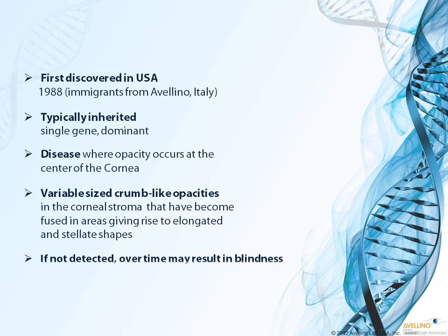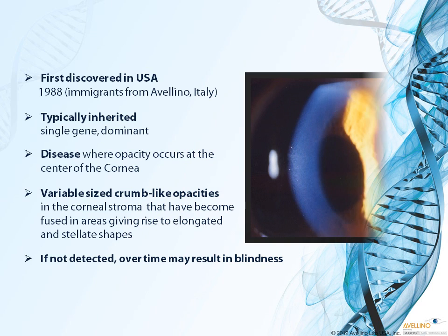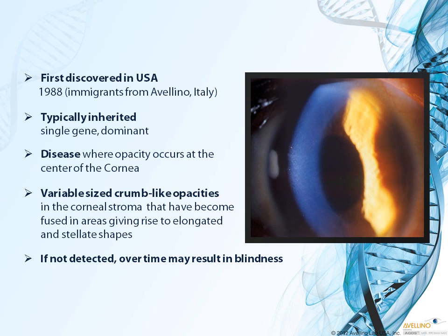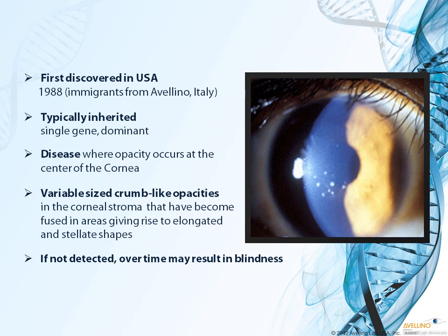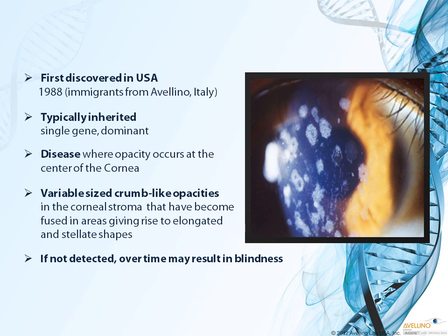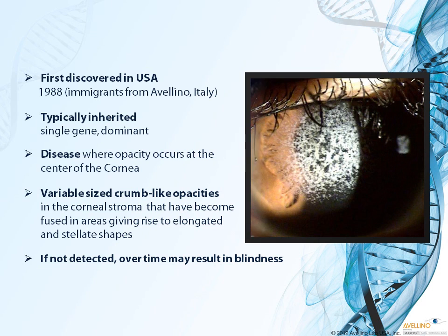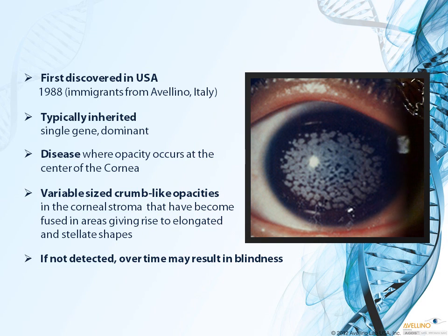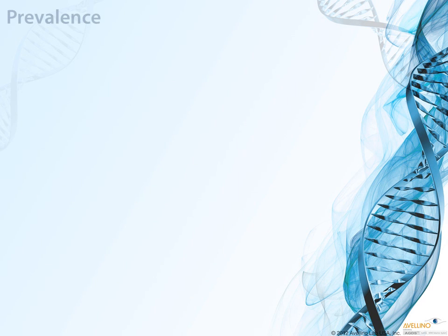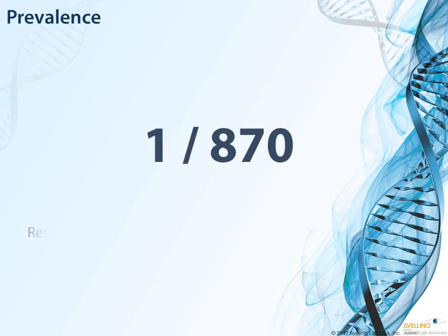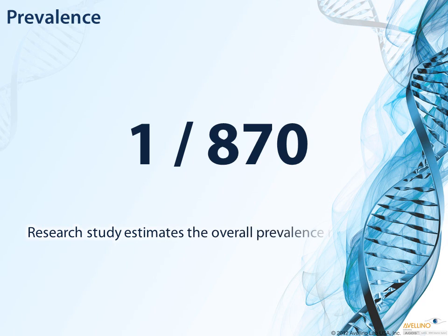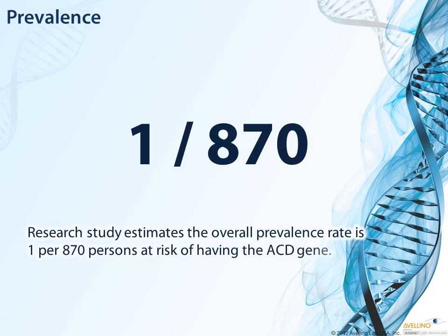If not detected, over time the disease may result in blindness. Research studies estimate the overall prevalence rate is 1 per 870 persons at risk of having the ACD gene.